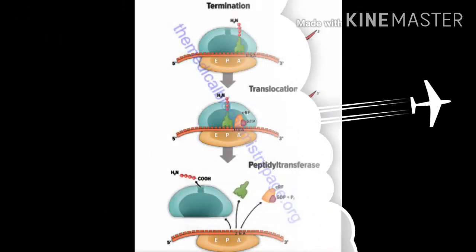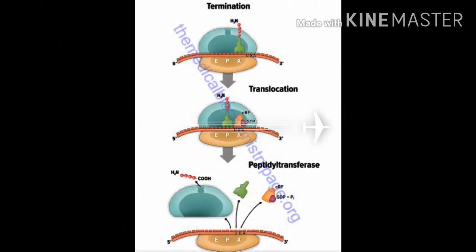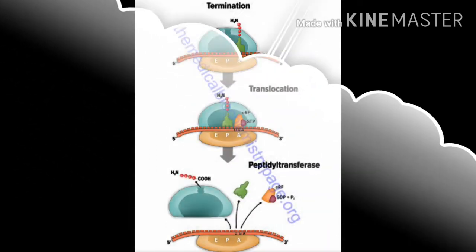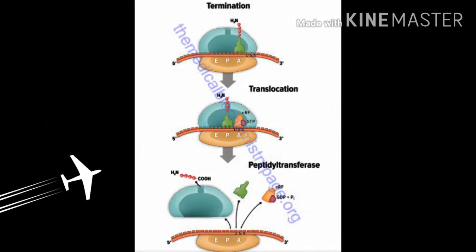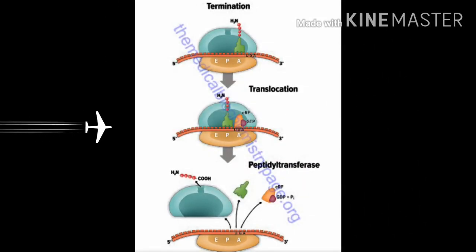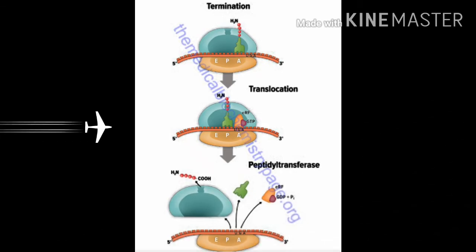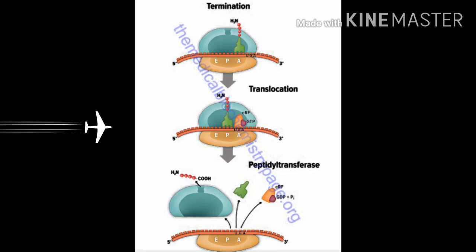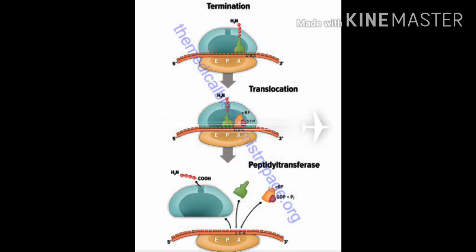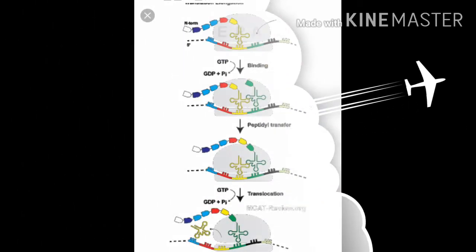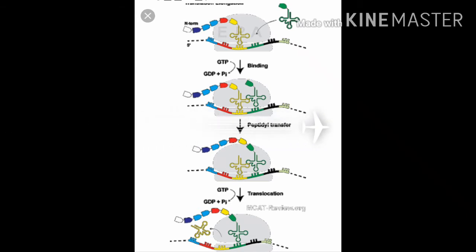The next amino acid at the A-site of the ribosome binds, and a peptide bond is formed between the carboxyl group and amino group. This bond is catalyzed by the enzyme peptidyl transferase. The ribosome continues to move from codon to codon along the mRNA in the 5' to 3' direction, and the polypeptide chain continues to grow.